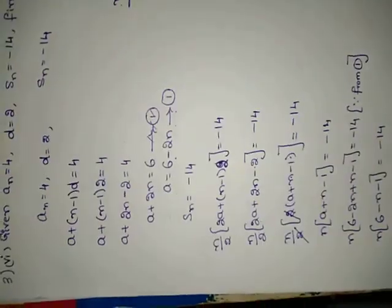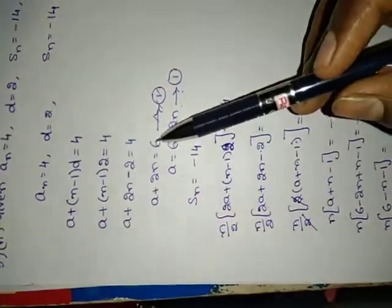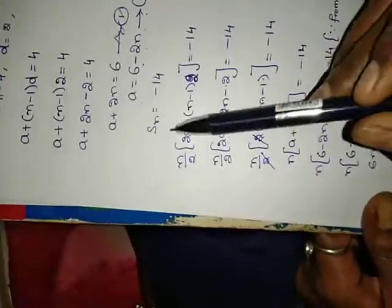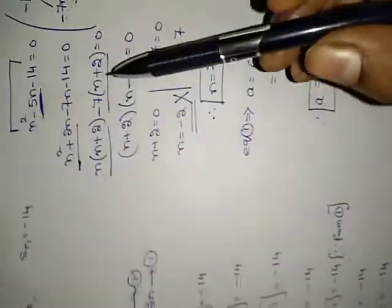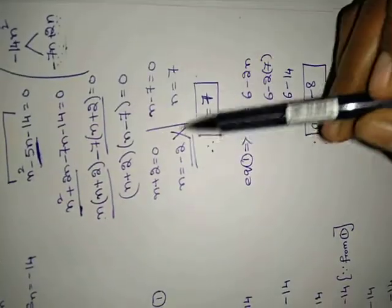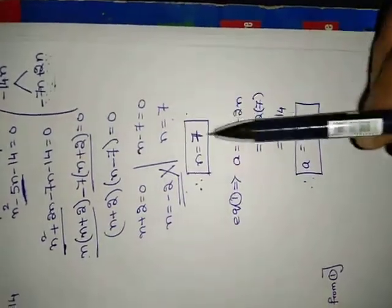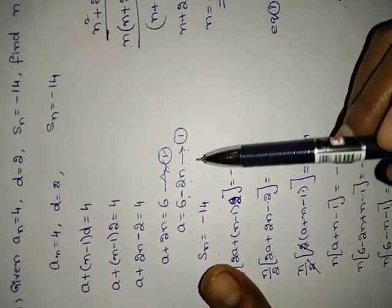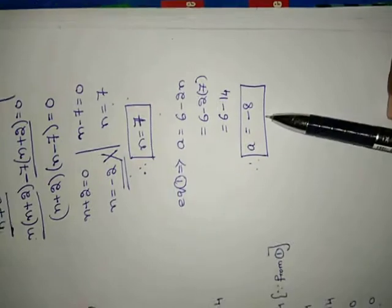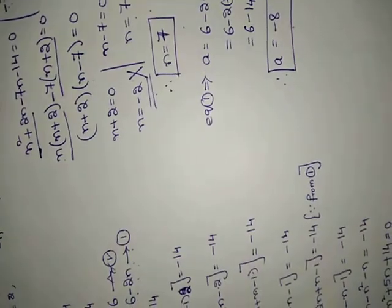We substituted in the AN formula and got one equation. Again in the SN formula we substituted the values and got another equation. By factorization method we solved and got two values. The negative value was rejected, so N equals to 7. Substituting in equation 1 gave A equals to minus 8. Shall we go to the next one?